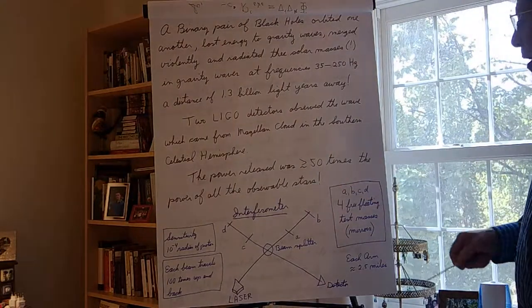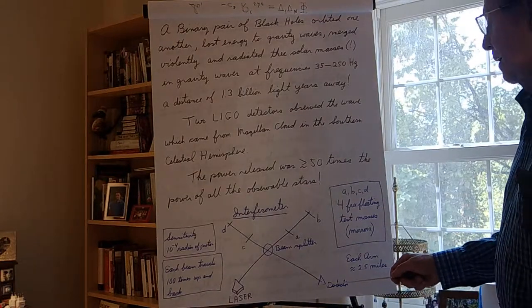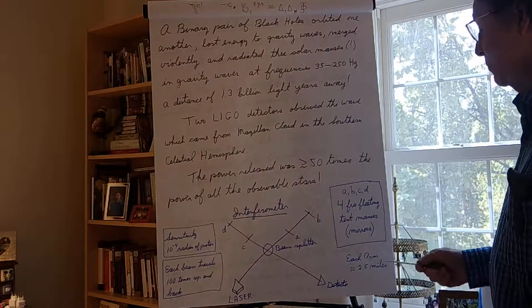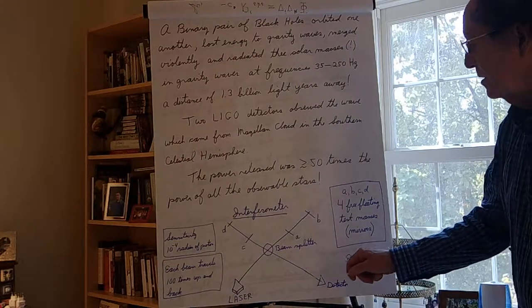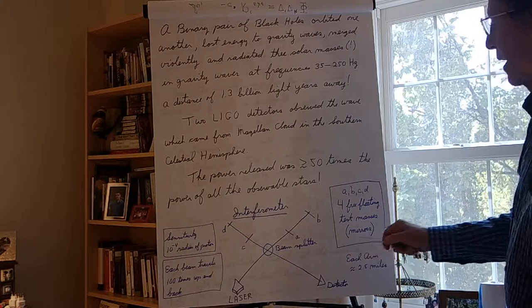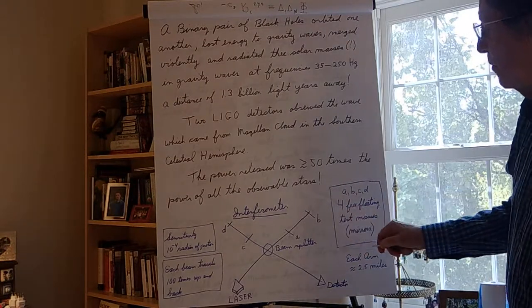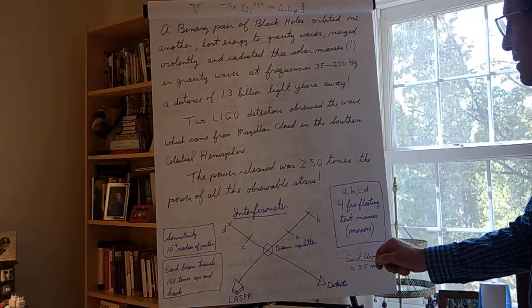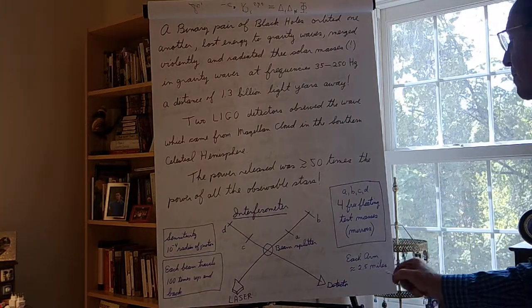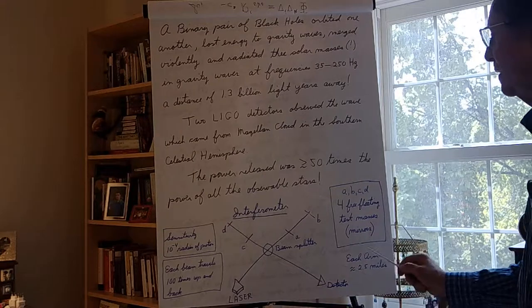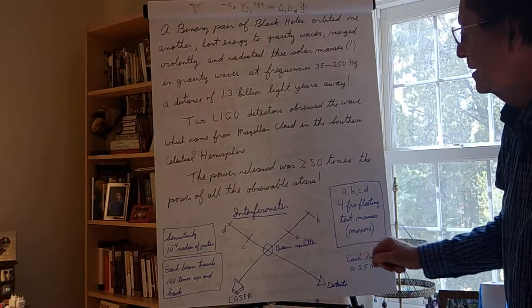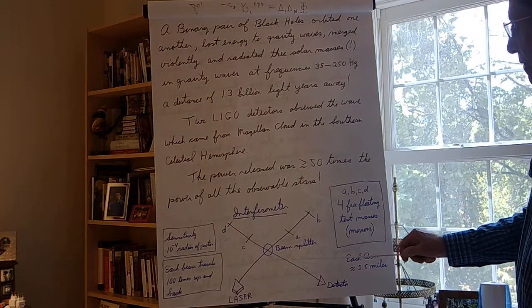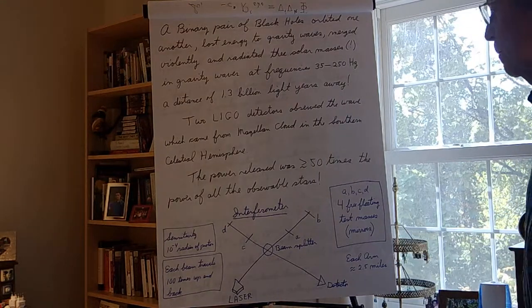So the LIGO experiment, LIGO meaning Laser Interferometry Gravity Observatory, consists of interferometers like the Michelson interferometer with two arms at right angles. A laser sends a beam, that's a beam splitter here, so part of the beam goes between detectors here and here, and part of the beam goes between detectors here and here. And the beams come back, they merge, they interfere, and they're detected.